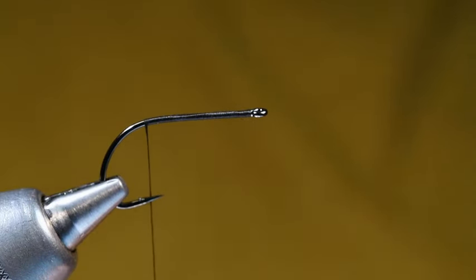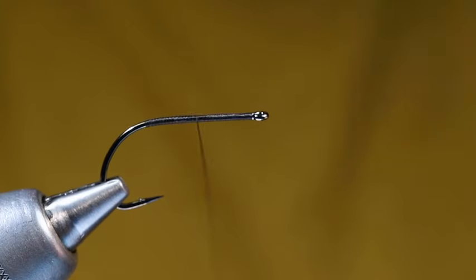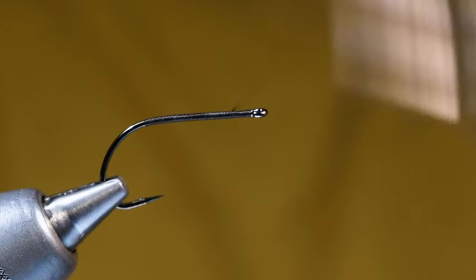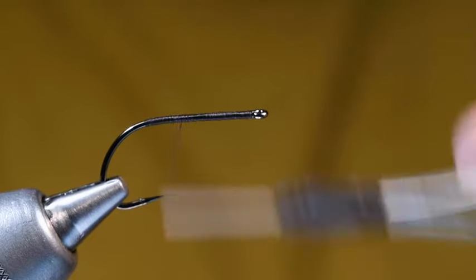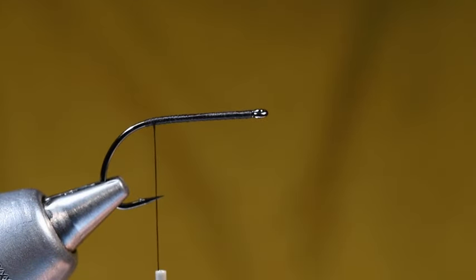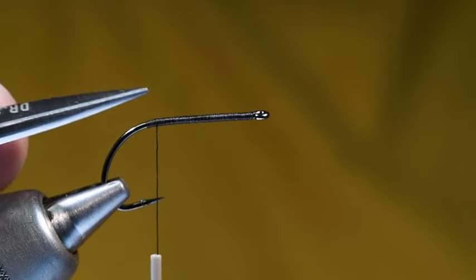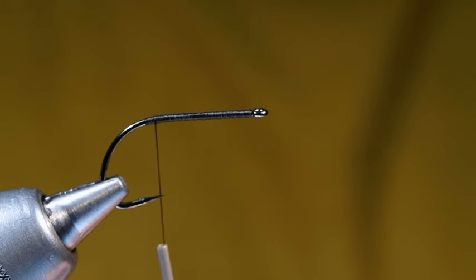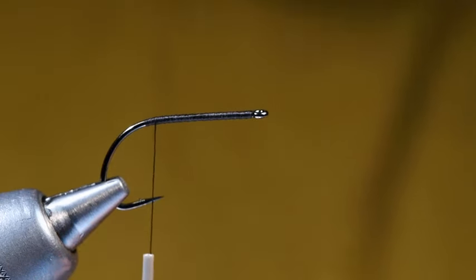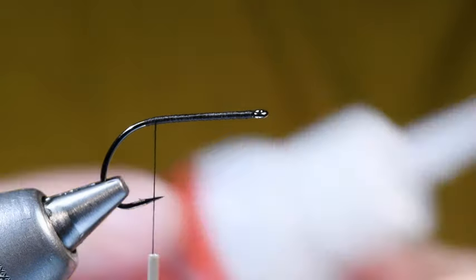What I've done is I've made a thread base all the way back to the bend. Then I want to go forward again in sort of tight spirals, and then work back again in wider spirals. What I'm trying to do is corrugate the hook shank a bit so that I've got some texture so that I can glue this foam down well and get it anchored in place.